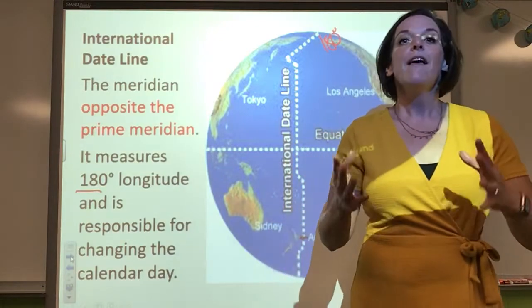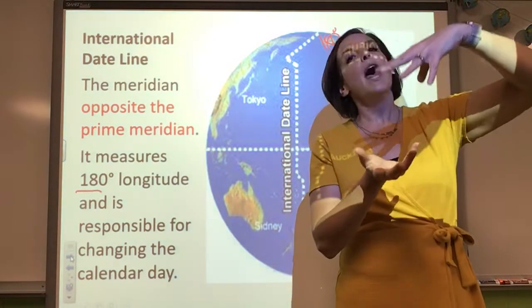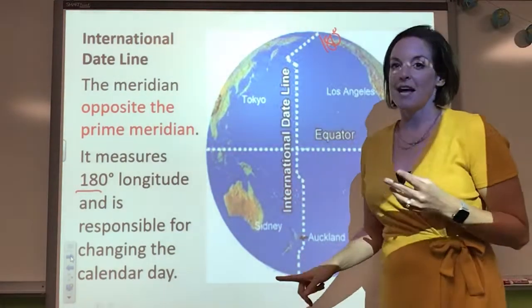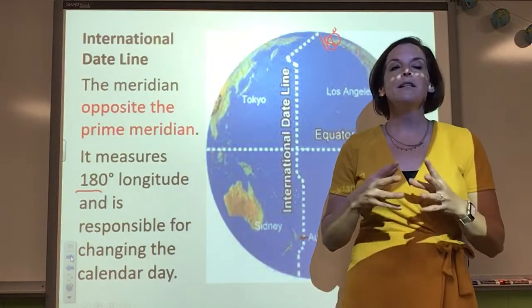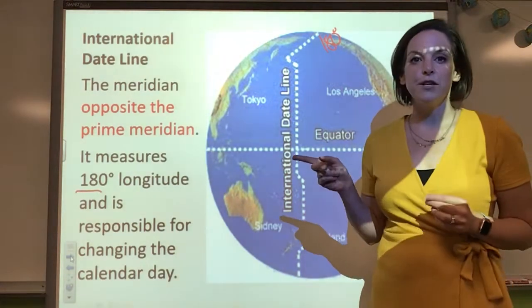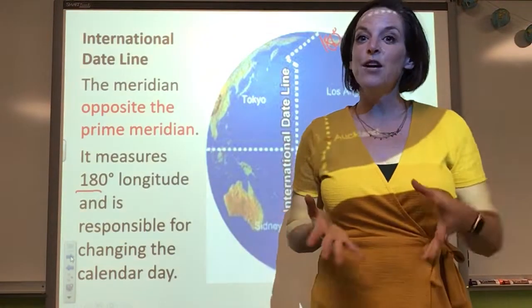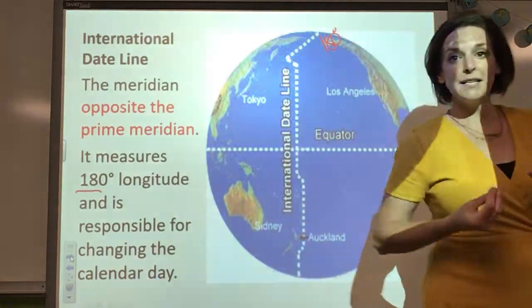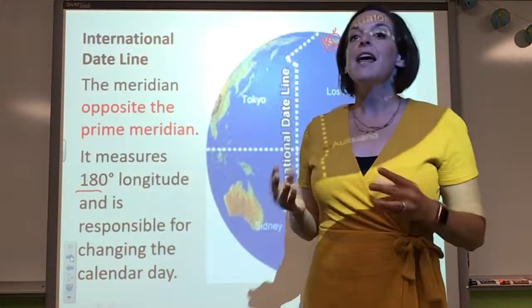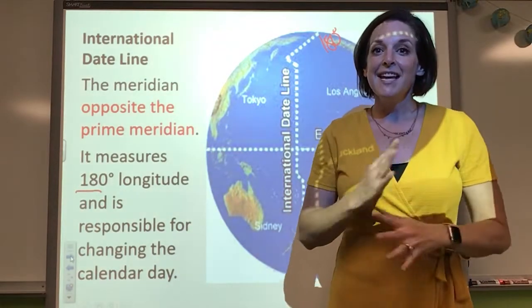But you can stand, too, on the equator in some areas and be in the northern and southern hemisphere. The international dateline, though, they cannot have it go through land, or at least land where people live, because this is the calendar date change. So you cannot have this imaginary line going through land and be like, well, today is Monday over here, but then if I cross the line, it's going to be Tuesday. That would cause way too much headache.